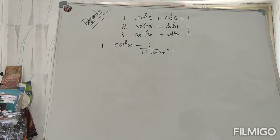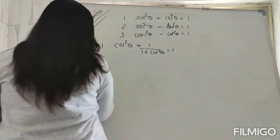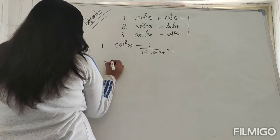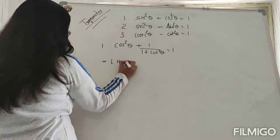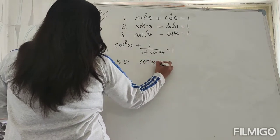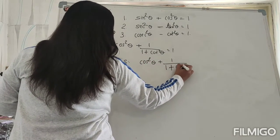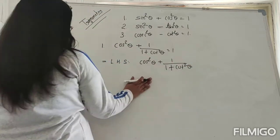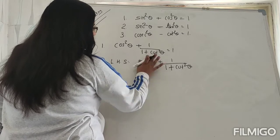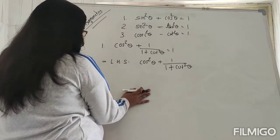Question number 1: cos²θ / (1 + cot²θ). We will have to use all these identities. So we will take our LHS. LHS is equal to cos²θ upon 1 + cot²θ. We want to get 1, so everything will cancel out and we will get 1.